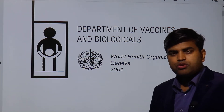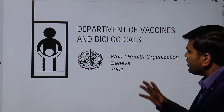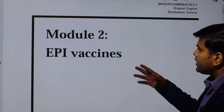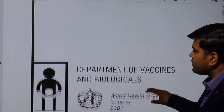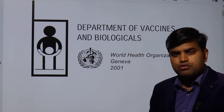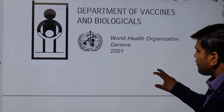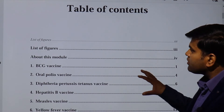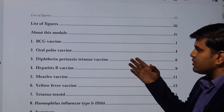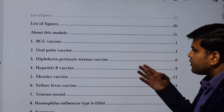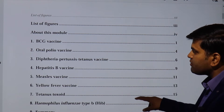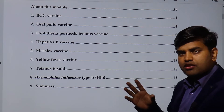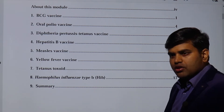Today we will be discussing some of the vaccines recommended on the EPI schedule — Module 2 EPI vaccines proposed by the WHO, the World Health Organization, from the conference in Geneva. This includes vaccines like BCG, oral polio, diphtheria, pertussis and tetanus, hepatitis B, measles, yellow fever, tetanus toxoid, and Haemophilus influenzae type B.